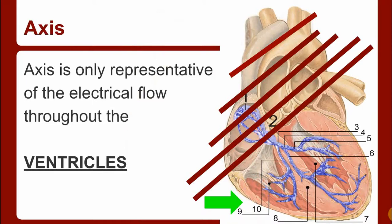Axis is only representative of the electrical flow through the ventricles in terms of how we speak about it. When we talk about cardiac axis, generally we're talking about the ventricles and the ventricles only.